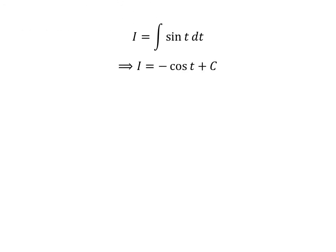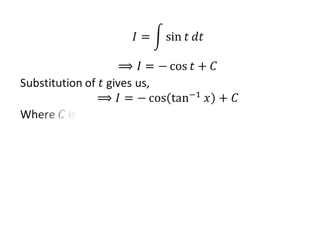The integral of sine of t is minus cosine of t. So I is equal to minus cosine of t plus capital C. Capital C is the arbitrary constant of indefinite integral. Never forget to add this constant. We have solved the integration in terms of t.